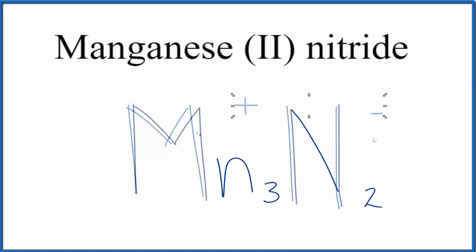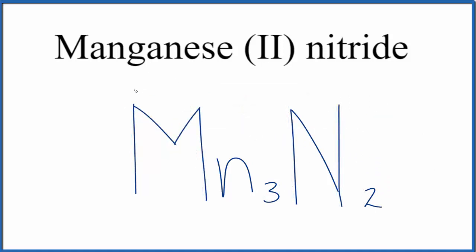Get rid of these symbols. And this is the formula for manganese 2 nitride, Mn3N2. But let's check our work. Let's see, we have manganese, we said that would be 2 plus, and we looked the nitrogen up, that was 3 minus.